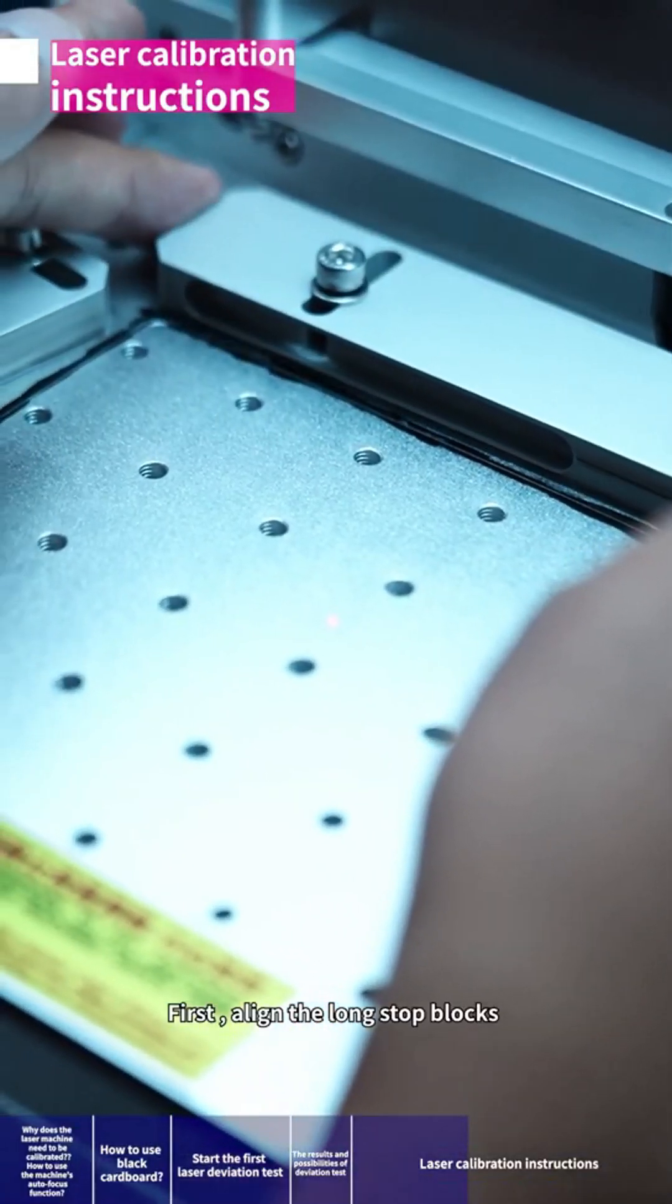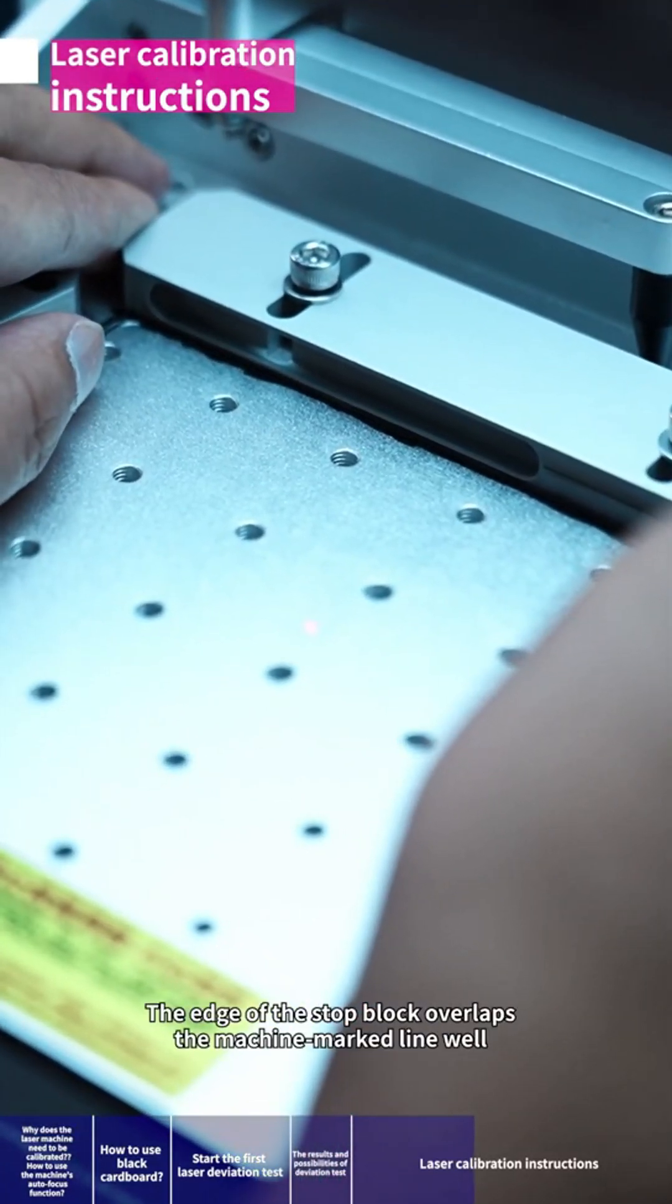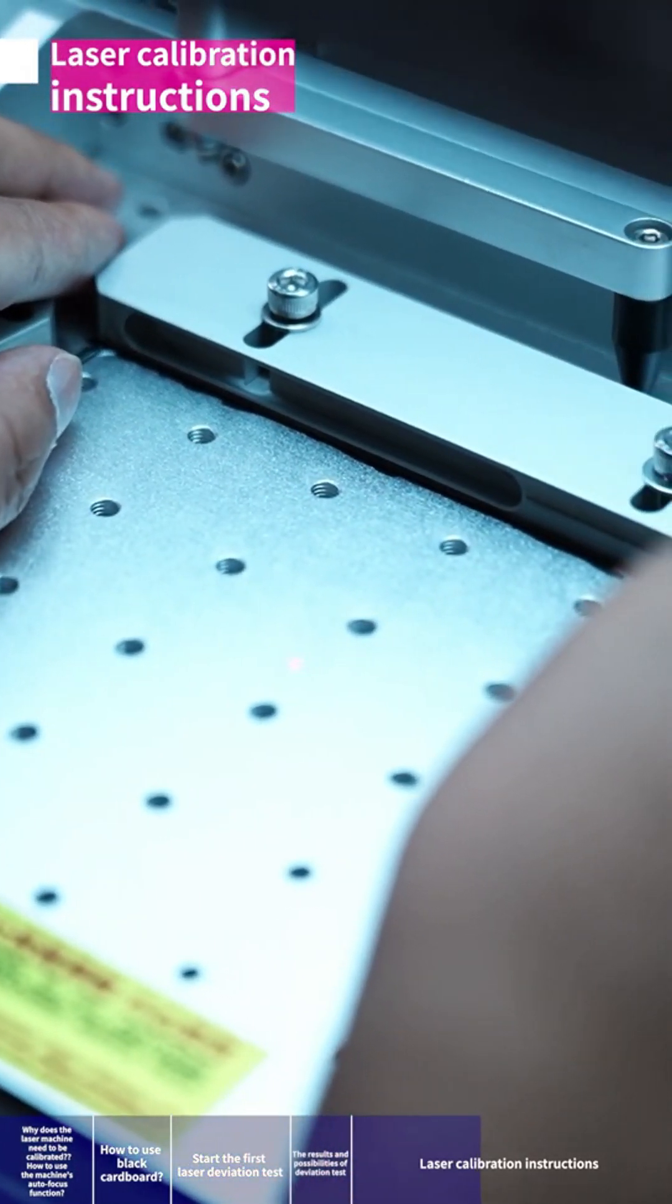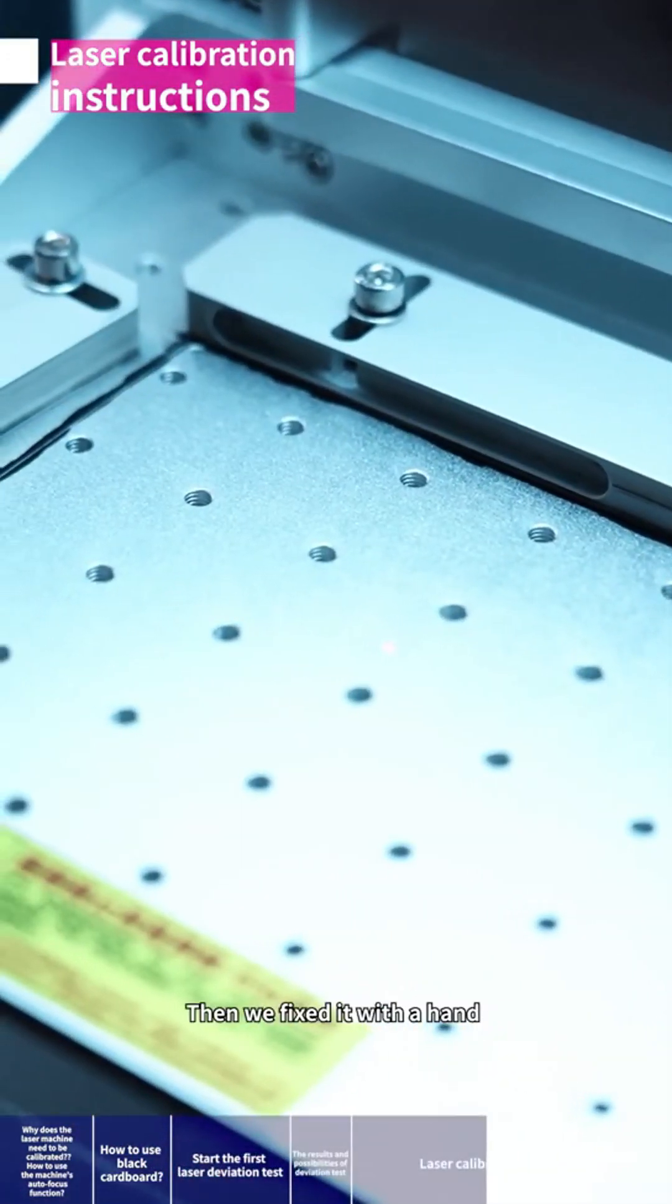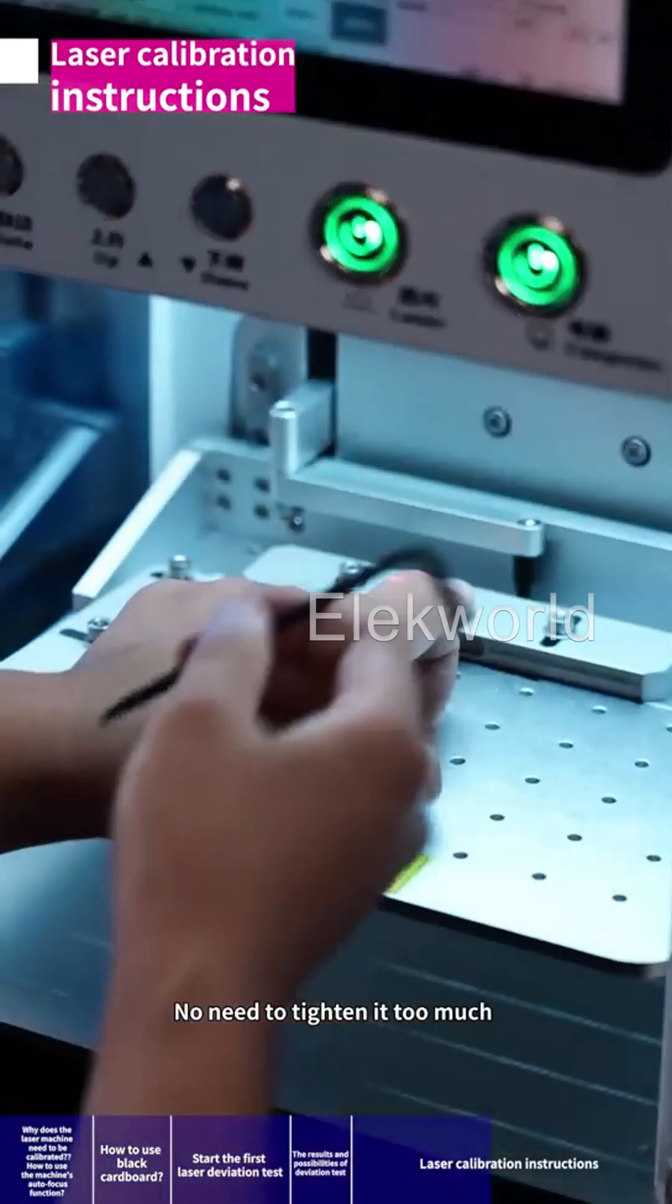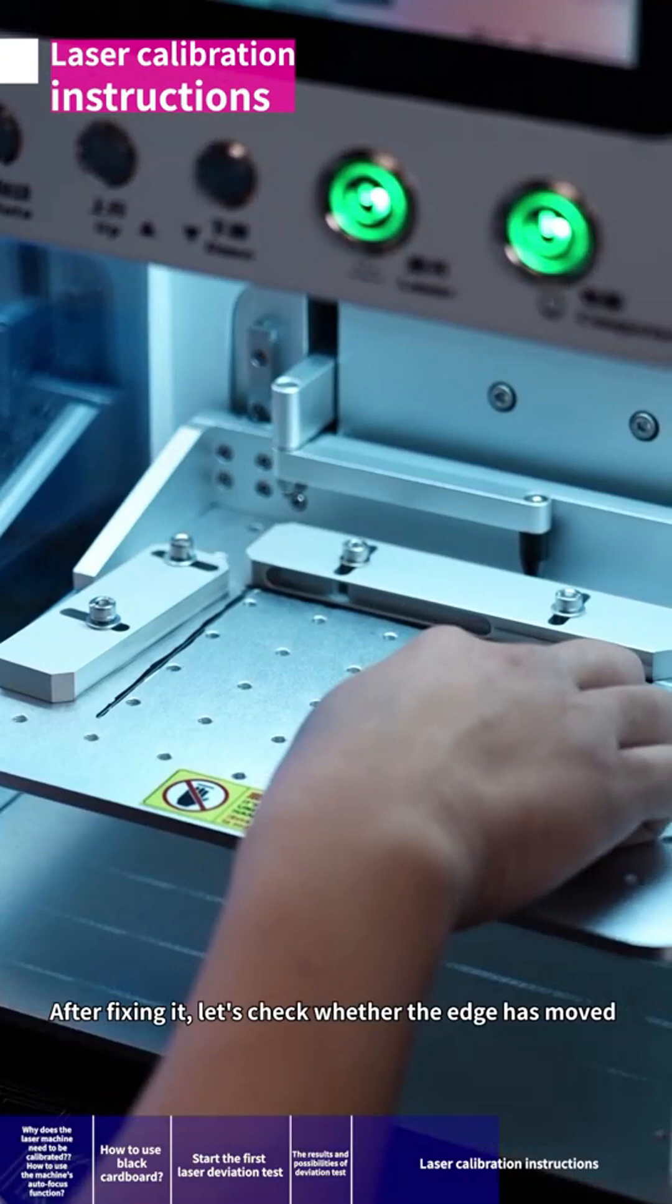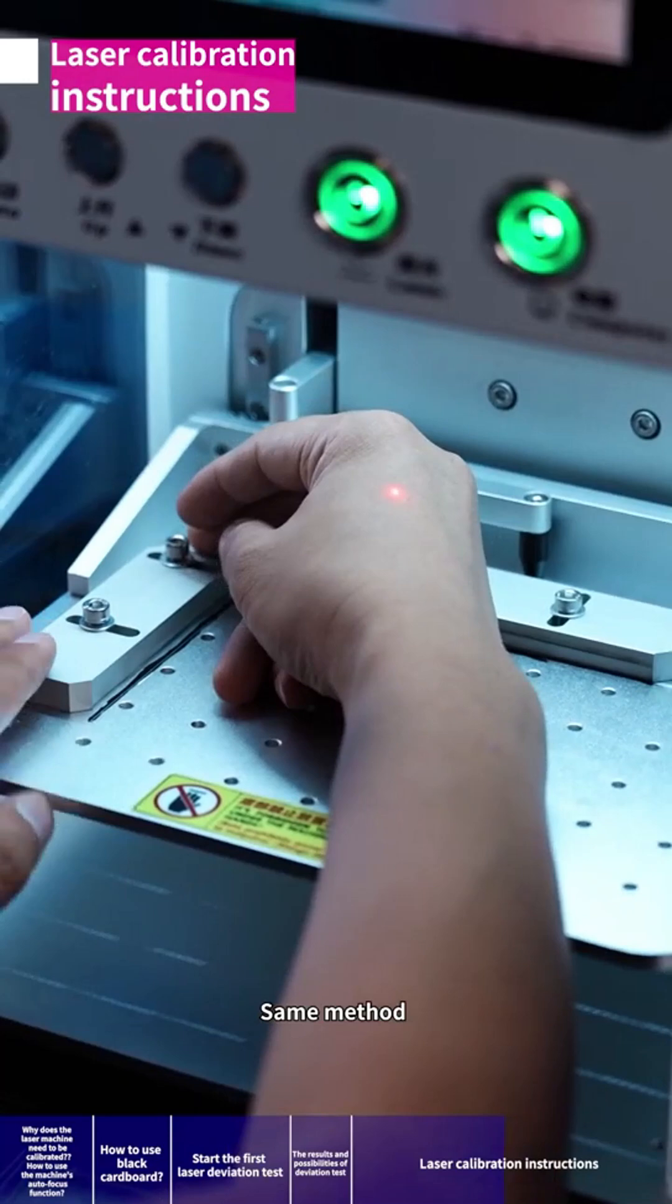First, align the long stop blocks. Slowly push this stop block over. The edge of the stop block overlaps the machine marked line well. Great, it's almost done now. Then we fix it with a hand and tighten the screws. No need to tighten it too much. A little bit of strength is enough. Keep it in place. After fixing it, let's check whether the edge has moved. If not, let's tune this. Same method.